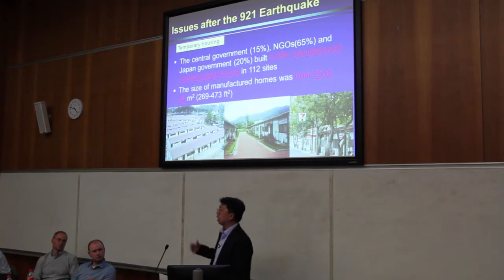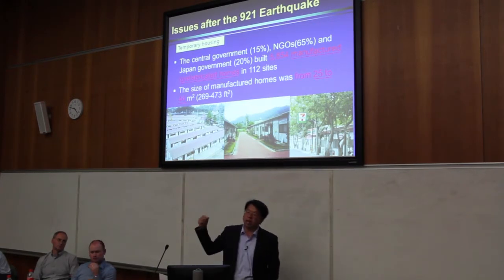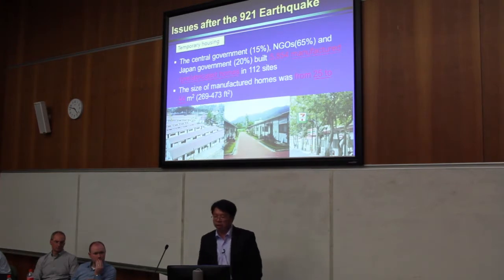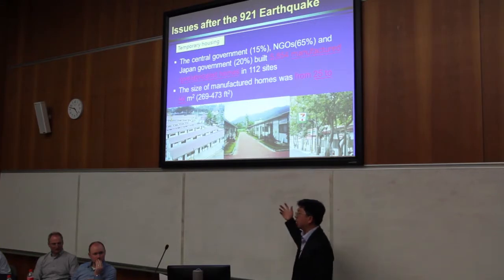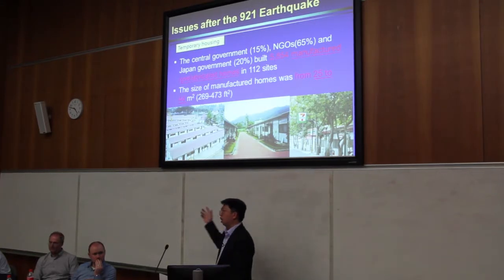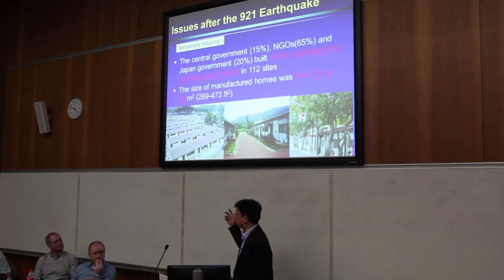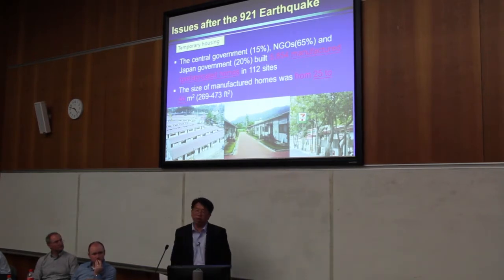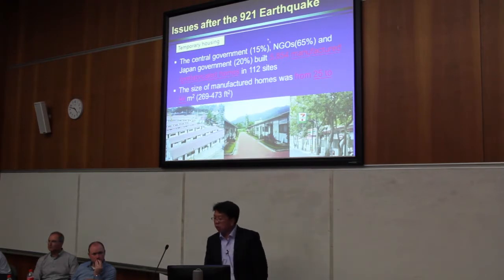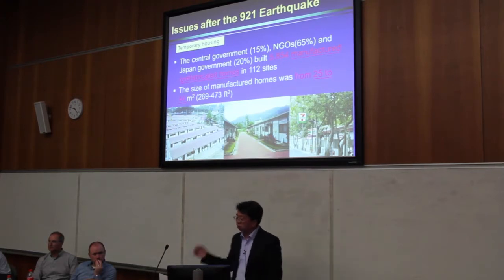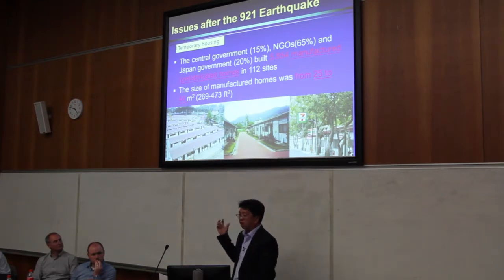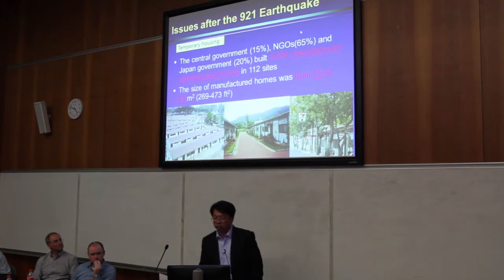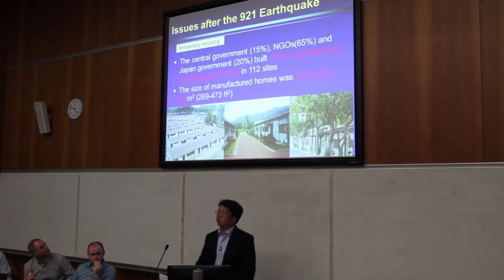The central government built 50% of the temporary housing, and 20% came from Japan — donated after the Kobe earthquake, which happened in 1995, four years before the 921 earthquake. About 65% of the temporary housing — what we call prefabricated homes — was provided by NGOs. The size of this kind of temporary housing was from 25 to 44 square meters. The policy was that the central government would plan and construct the temporary housing, while the local government would do the management.